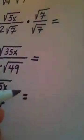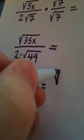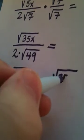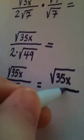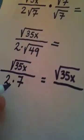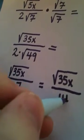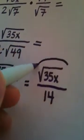So look what I end up with for my final answer. I have the square root of 35x in the numerator, and in the denominator, 2 times 7 is 14. And we're finally done.